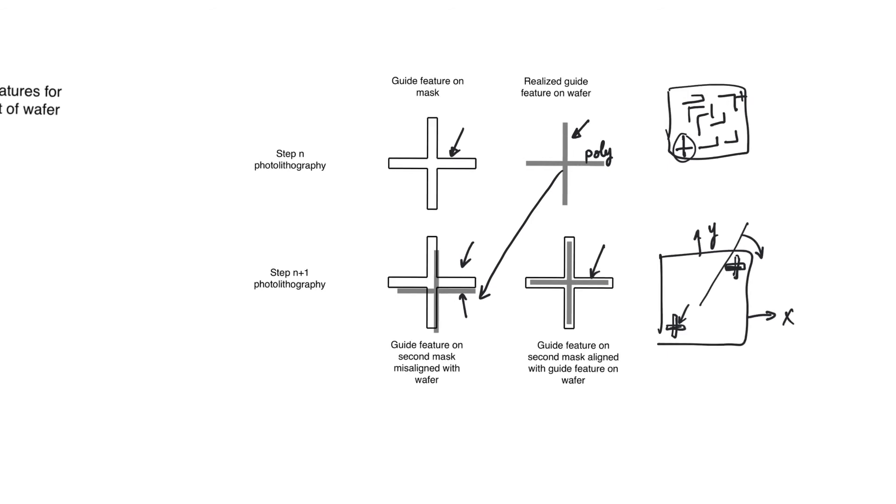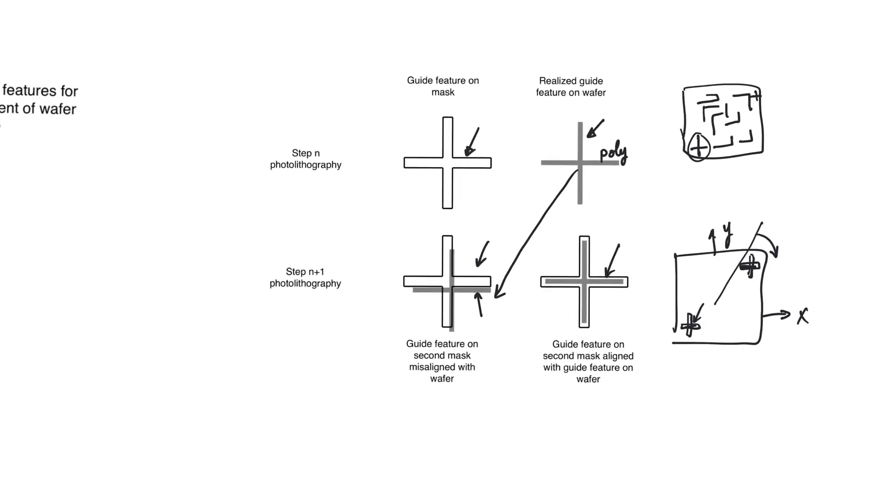Now when we talked about misalignment, we talked about misalignment between metal and poly, for example, that could lead to the formation of unwanted shorts or opens.